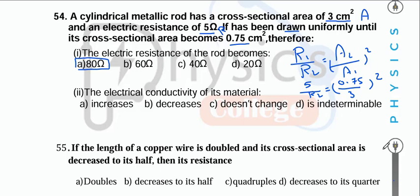The factors affecting conductivity are the material type and temperature. Since neither the material nor the temperature was changed here, the conductivity doesn't change.